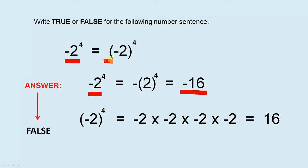For the second one, minus two to the power of four gives you minus two by minus two by minus two by minus two. And that gives you 16. Because if you multiply all those minuses together, you actually get a plus answer. So the left-hand side gives you minus 16. The right-hand side gives you plus 16. So the answer is false. They are not equal to each other.